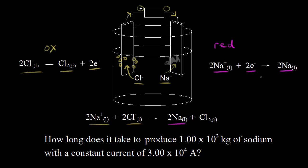We'd have bubbles of chlorine gas forming at this electrode. This is an important reaction in industry — it's a good way to form sodium metal. The problem asks: how long does it take to produce 1.00 × 10³ kilograms of sodium with a constant current of 3.00 × 10⁴ amps?